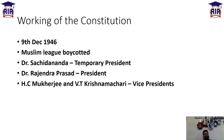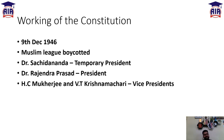Now let's move to the next topic - the Working of the Constitution. Elections to the Constituent Assembly were held in July-August 1946, and on December 9, 1946, the first meeting of the Constituent Assembly was held. This is a frequently asked question in many exams - on which date was the first meeting of the Constituent Assembly conducted? The answer is December 9, 1946.